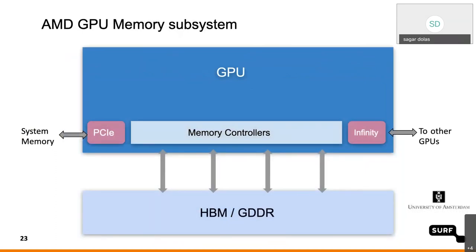Looking at the GPU memory subsystem, it's not very different from how other accelerators behave. It has memory controllers, high bandwidth memory (HBM) — one or two — or GDDR memory type. It has a PCI port connecting it to the CPUs, and an Infinity Fabric link connecting it to other GPUs for peer-to-peer communication. The GPU memory subsystem is pretty much the same as NVIDIA or other accelerators.